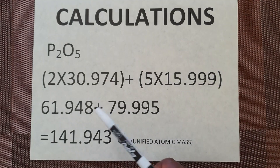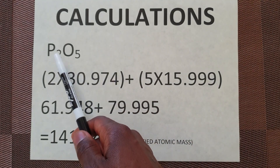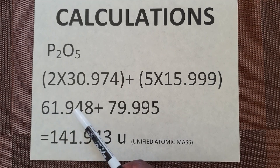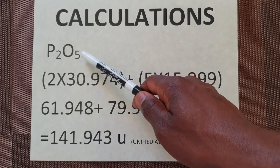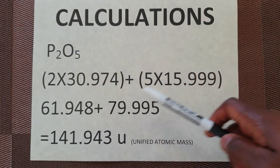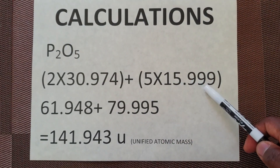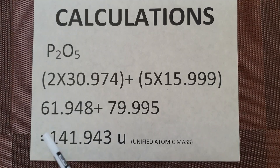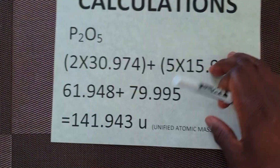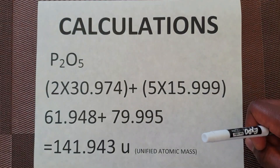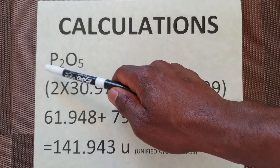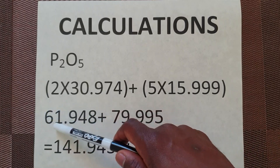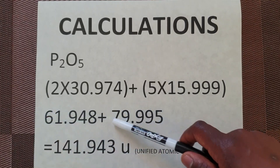The atomic mass number for phosphorus is 30.974 and there are two atoms of phosphorus, so we multiply 2 times 30.974 and we get 61.948. We do the same with oxygen — there are five atoms of oxygen and oxygen's atomic mass number is 15.999, so we multiply 5 times 15.999. We add both and we derive at this number. Please bear in mind that we are trying to figure out the amount of phosphorus that is in the fertilizer bag, so we are only going to be using the number that represents phosphorus.